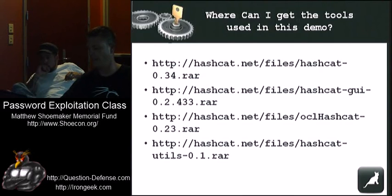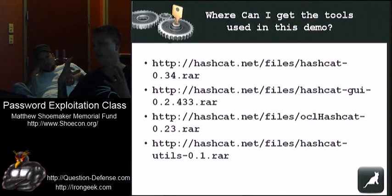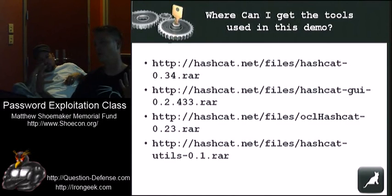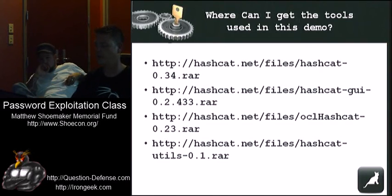OCL Hashcat obviously requires OpenCL. All OpenCL is is an implementation to unify NVIDIA and ATI GPU drivers — it used to be CUDA and Stream, and everybody wanted something cross-platform, so OpenCL was born. OpenCL should work with either the newest Stream drivers or the newest CUDA drivers; it's built into both.